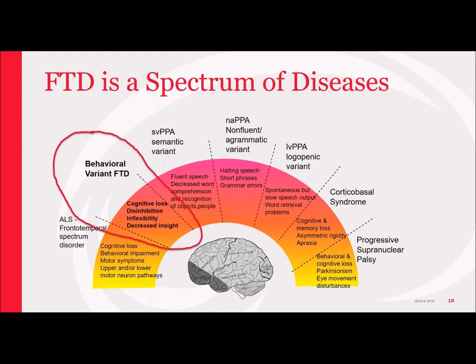Behavioral variant FTD is the most common subtype of the FTD spectrum diseases, and might also be known as Pick's disease or frontotemporal dementia. Clinically, behavioral variant FTD is the most common diagnosis that people being seen at a specialty clinic would be receiving. This type of FTD is marked by changes in cognition, increased disinhibition, inflexibility, and decreased insight.